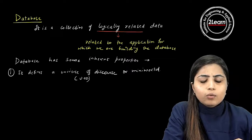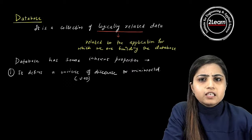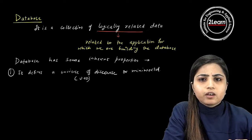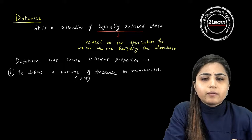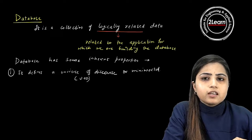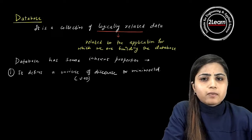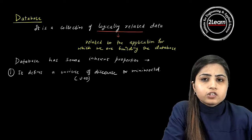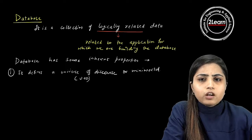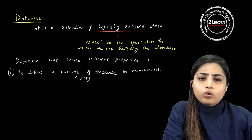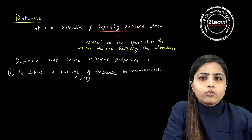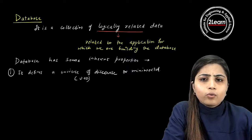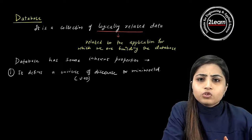The database specifies the mini world, meaning a particular real-world application. For example, if you have to make a banking database, you need to understand how a bank actually works in the real world. A customer will open an account, deposit money, earn interest, and withdraw amounts. These real-world entities — withdraw, deposit, customer, employee, account, savings account, checking account — are what the database will represent.